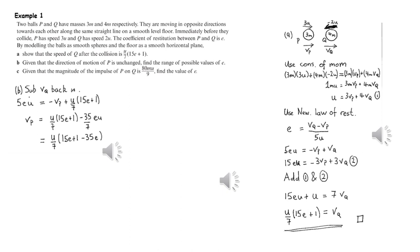In part B we can find an expression for the velocity of P after the collision, again in terms of E, and then if the direction of motion is unchanged, the velocity of P has to be positive and that enables us to find this inequality for E.